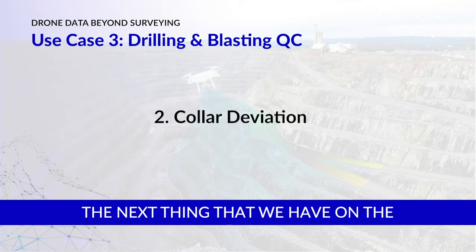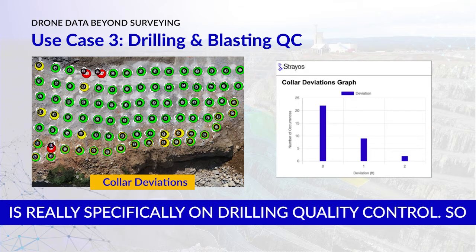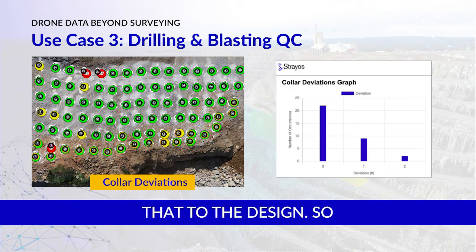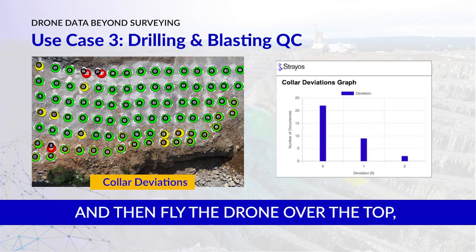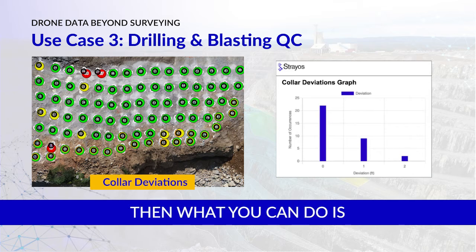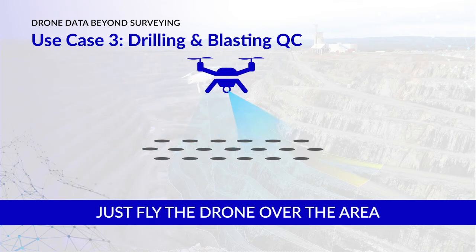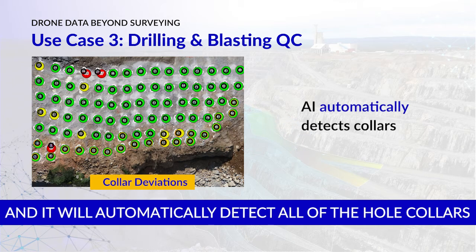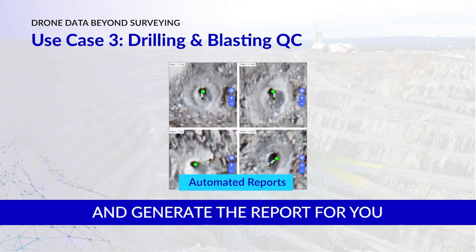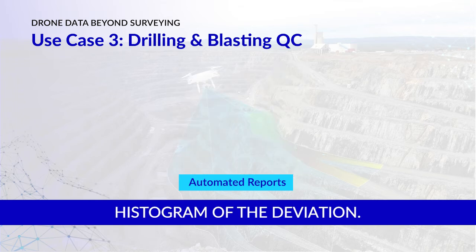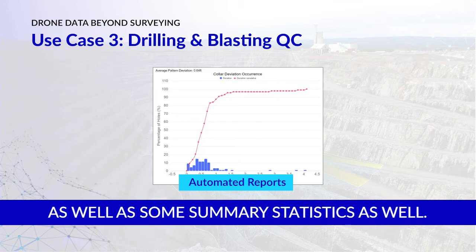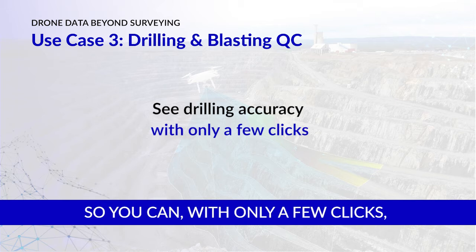The next thing on the drill and blast quality control side is specifically about drilling quality control. You have AI that can detect the hole collars and automatically compare them to the design. If you upload the design hole locations and fly the drone over the top — as long as you have survey control like RTK or PPK drone, or ground control points — it will automatically detect all of the hole collars and find the deviation between those and the design locations, then generate a report with a histogram of deviation, deviations for each hole, and summary statistics. With only a few clicks, you get a measure of your drilling accuracy.